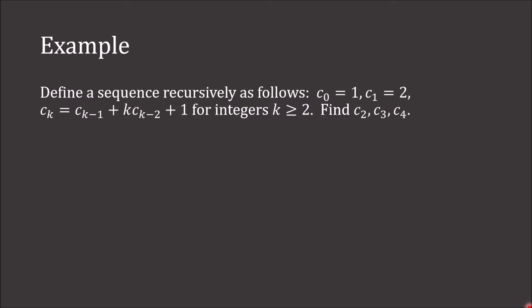Here we have a recursively defined sequence. For integers, c0 is equal to 1, c1 is equal to 2, and ck equals c sub k minus 1 plus k times c sub k minus 2 plus 1, for integers k greater than or equal to 2. We need to find c2, c3, and c4.